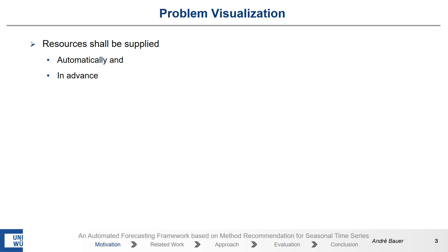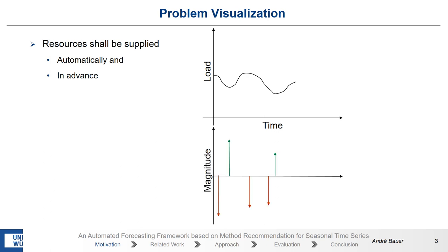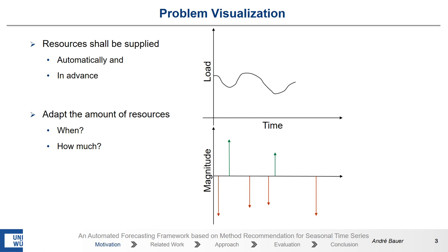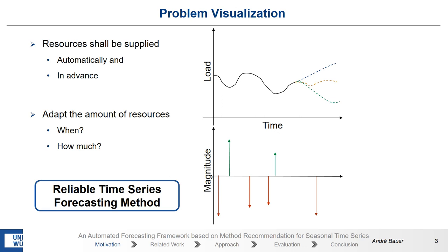Therefore, the resources in the cloud shall be supplied in an automatic and proactive manner. Current approaches observe the load and based on the load, they either release or add resources. In order to be proactive, we have to know when we need resources and how much resources. To this end, we could perform different forecasts, each resulting in a different future, and therefore we need a reliable time-series forecasting method.